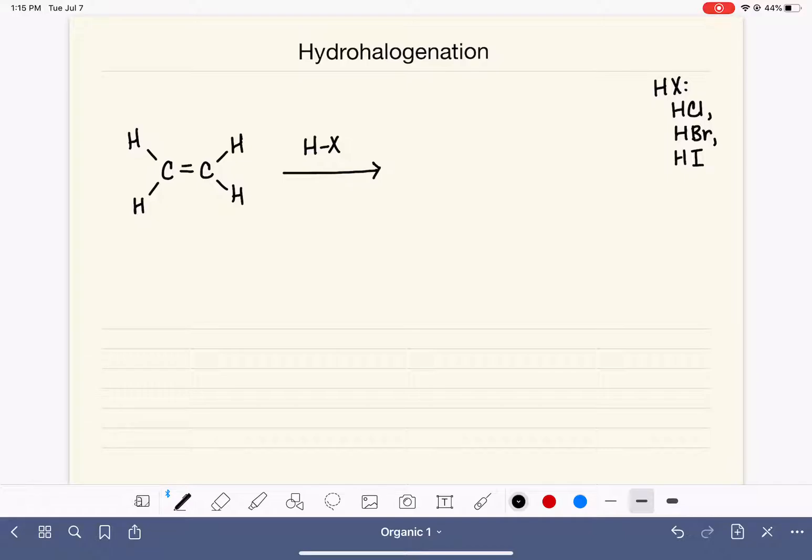In this reaction, the HX molecule adds itself to the carbon-carbon double bond. This causes the carbon-carbon double bond to be converted to a single bond. We add the hydrogen to one of the carbons of the alkene and we add the halogen to the other carbon. So we get a product that looks like this, an alkyl halide.